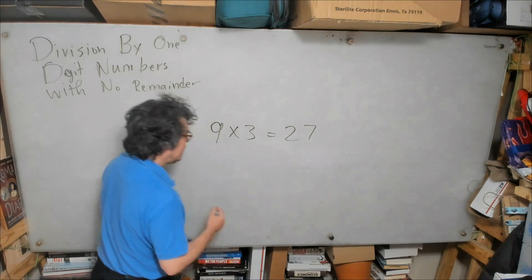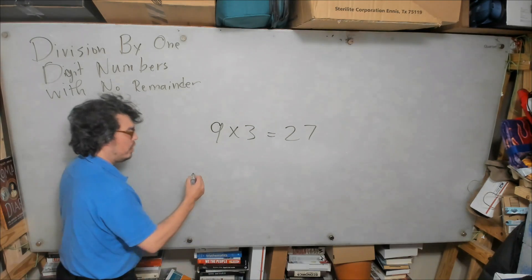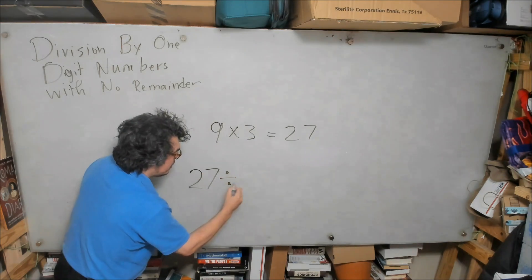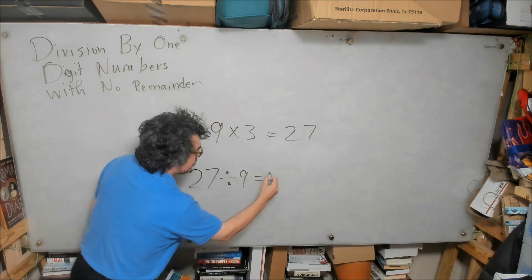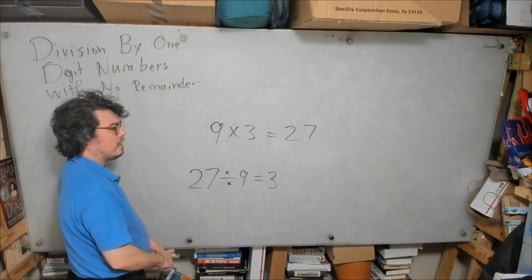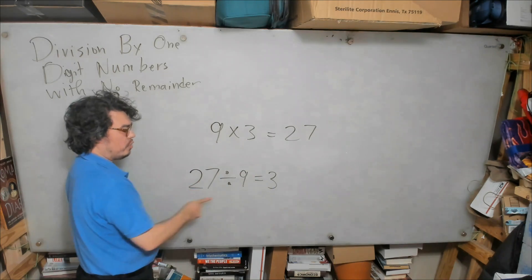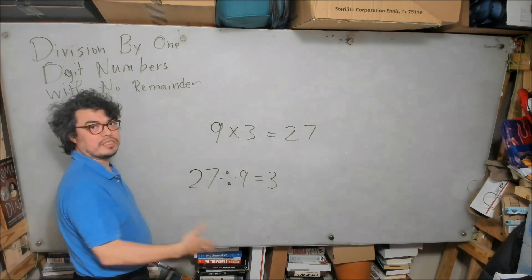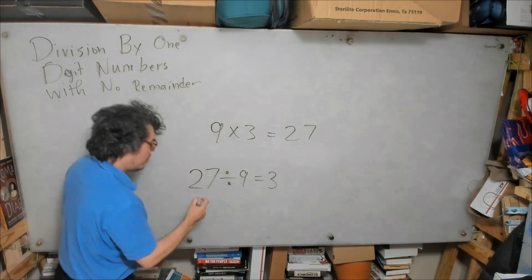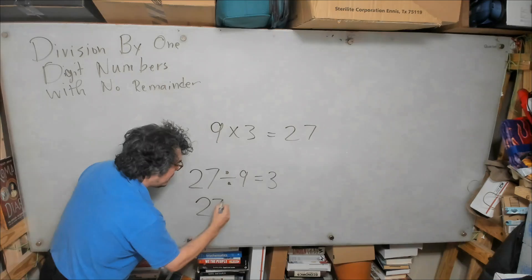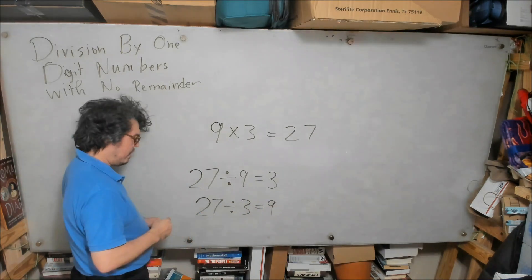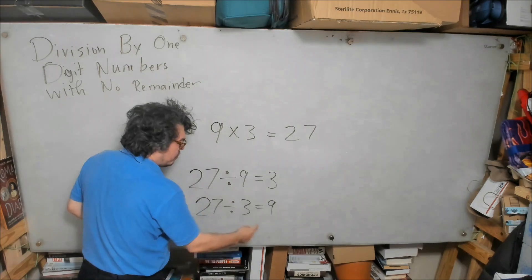Now these statements will be written like this. I could say 27 divided by 9 equals 3. Why? Because 3 times 9 is 27. So in that sense, division is the opposite of multiplication. By the same reasoning, 27 divided by 3 is 9, because 9 times 3 is 27.